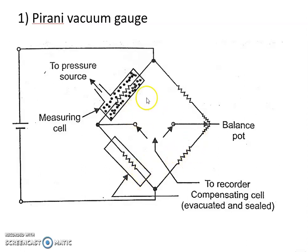The resistance change of this filament in the measuring cell is measured by the use of a resistance measuring bridge which is calibrated in terms of pressure. In this way, the applied pressure is measured in the form of change in resistance.